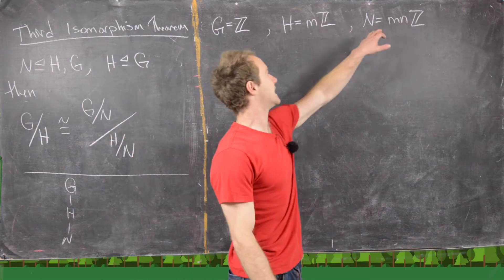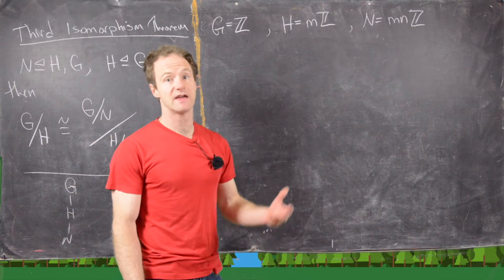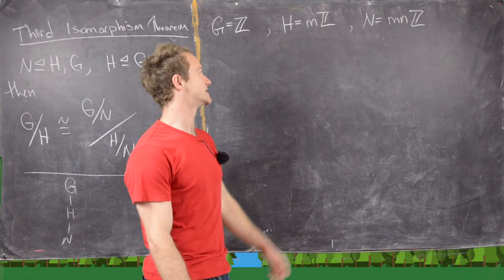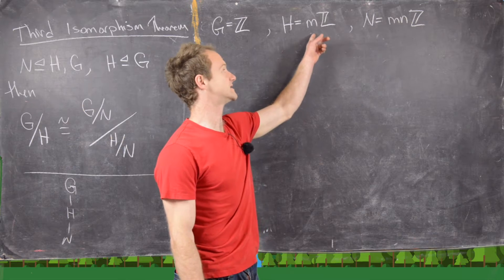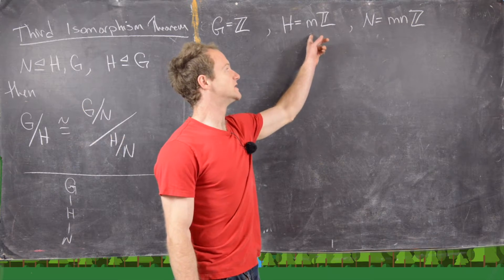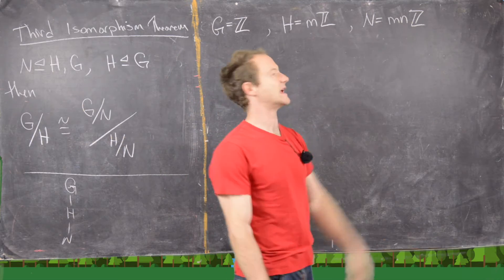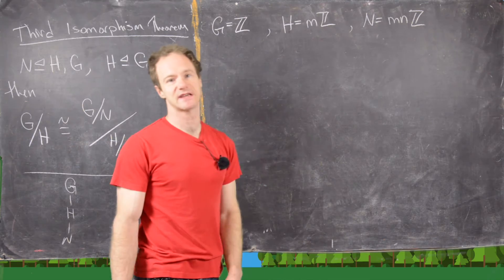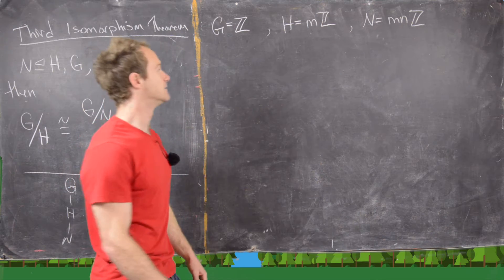And then we need a subgroup of H. That's going to be a cyclic subgroup of a cyclic group, so it's going to be cyclic generated by MN — in other words, MNZ.